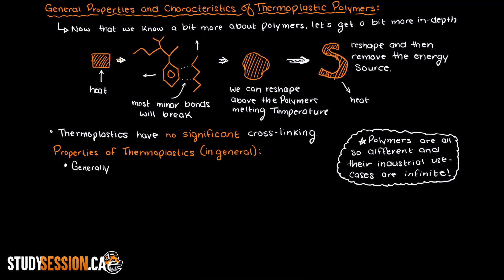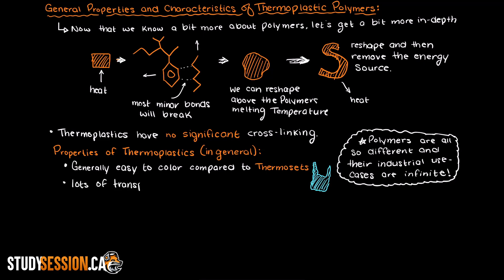Thermoplastics are generally easy to color compared to thermosets, such as the colored LDPE bags you may get from the grocery store. Thermoplastics are also great for creating items that are transparent. Thermoset polymers are very limited in terms of which polymers are actually see-through, whereas there are many thermoplastics that can be used for this.